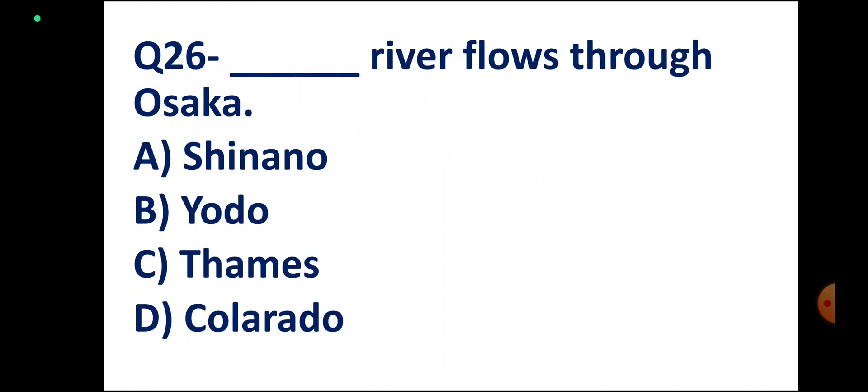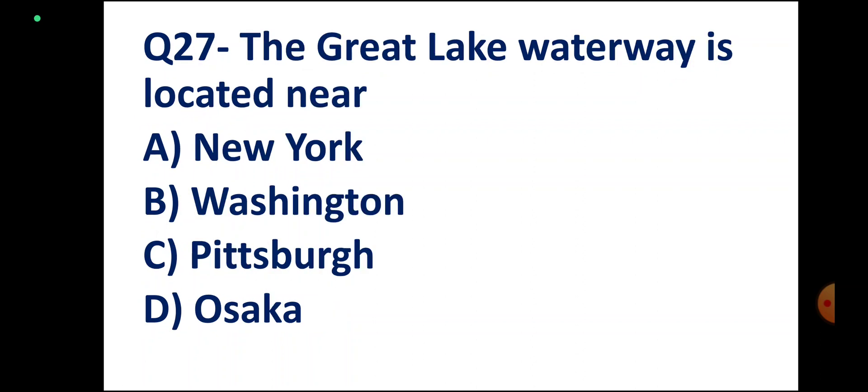Question number 26. DASH river flows through Osaka. Options: Shinano, Yodo, Thames, Colorado. Correct answer: Yodo.